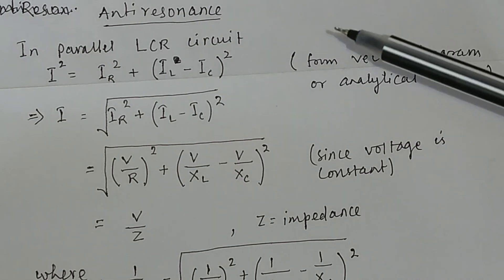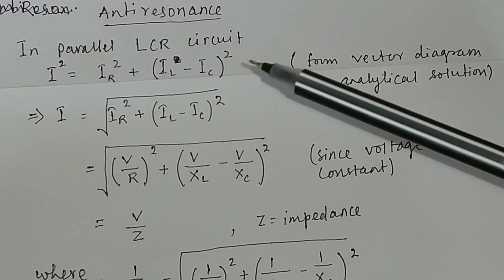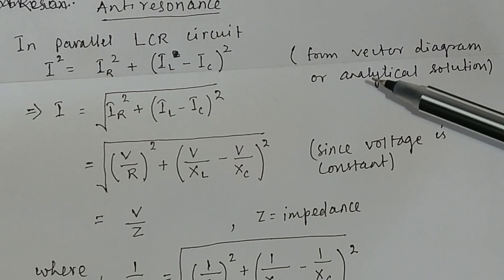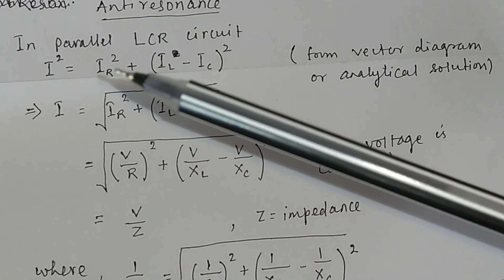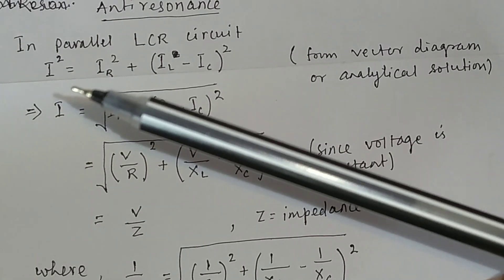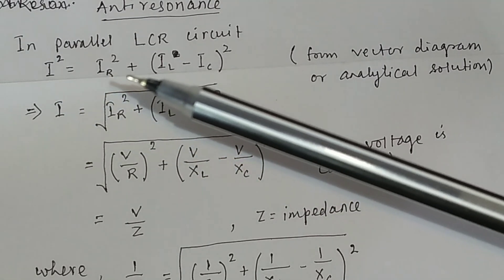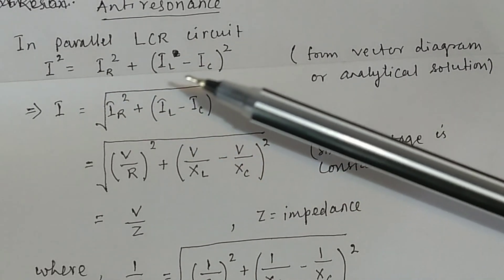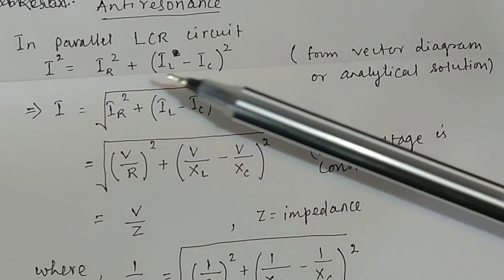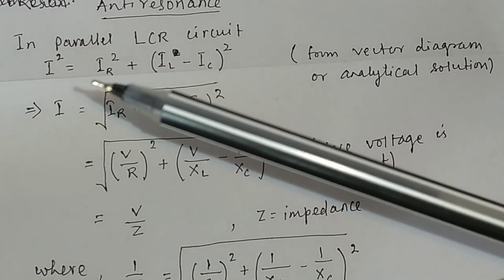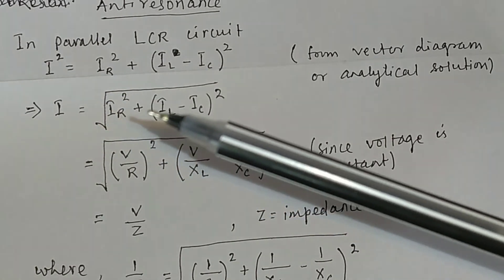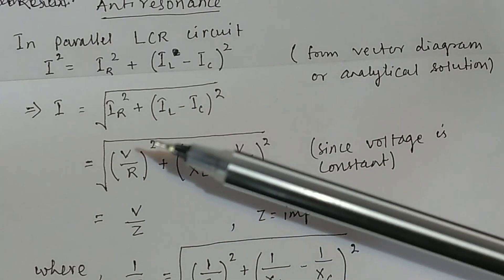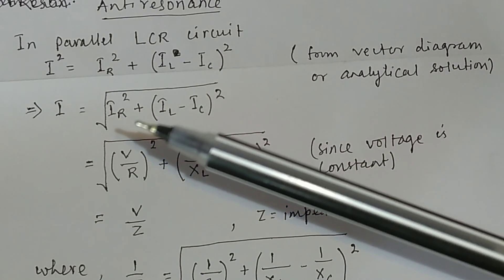What is anti-resonance in a parallel LCR circuit? Using the vector diagram or analytical solution, the total current is given by: I squared equals IR squared plus (IL minus IC) squared. This follows from the triangle law of vector addition, applying the Pythagoras theorem. So I equals the square root of IR squared plus (IL minus IC) squared. We know IR equals V divided by R.